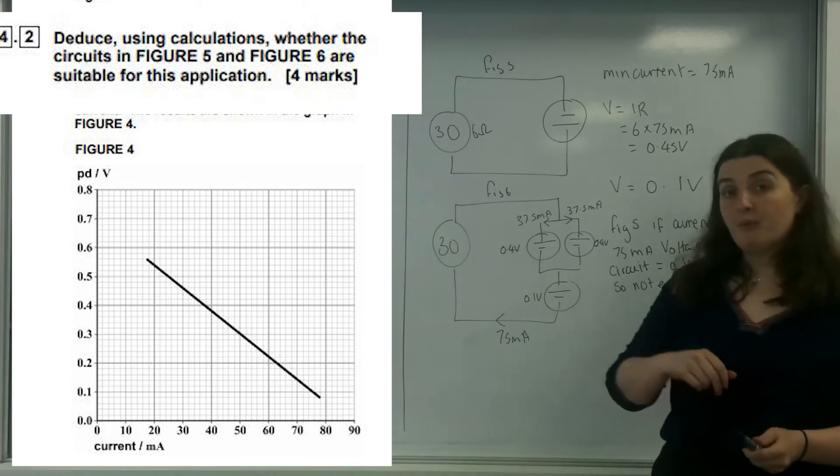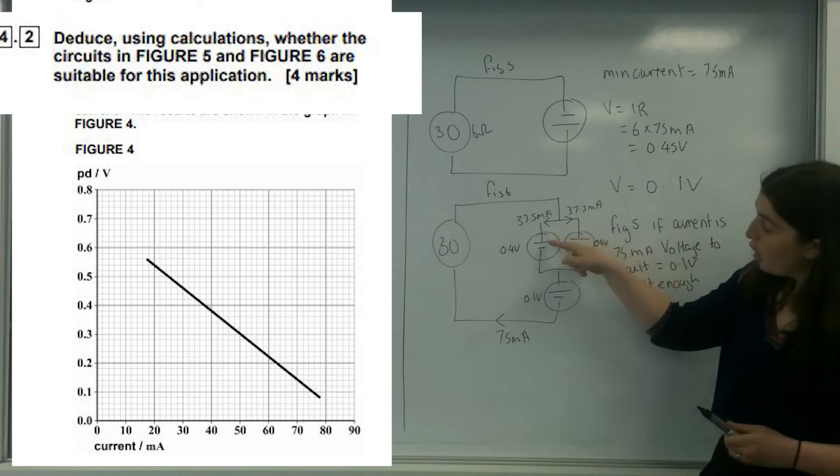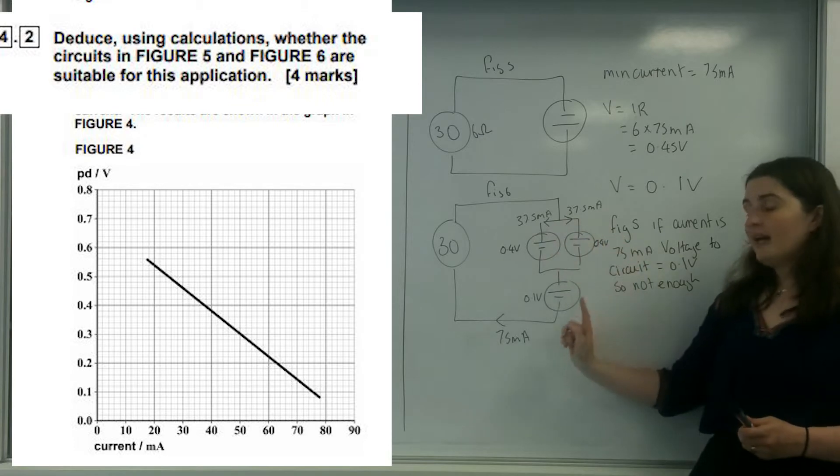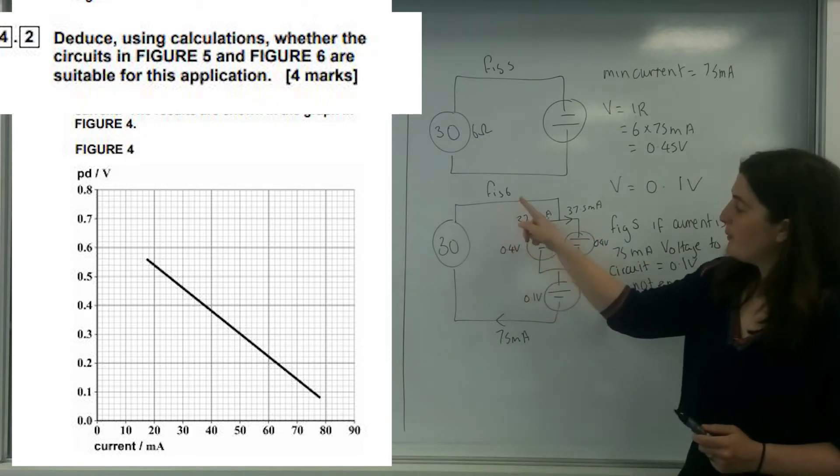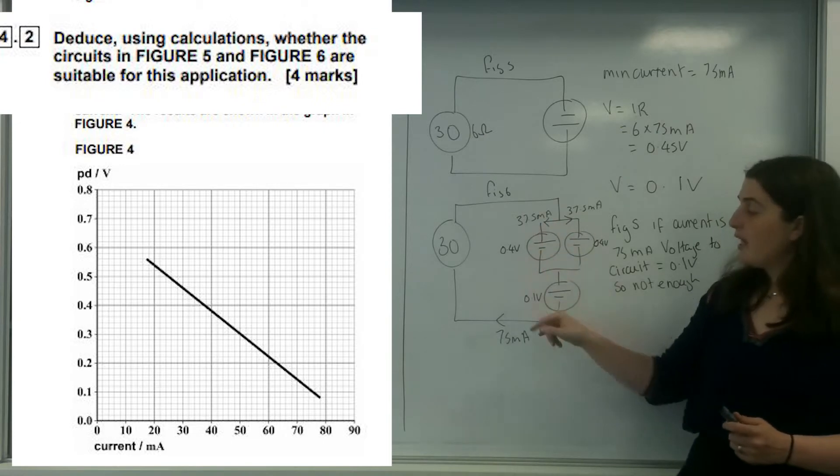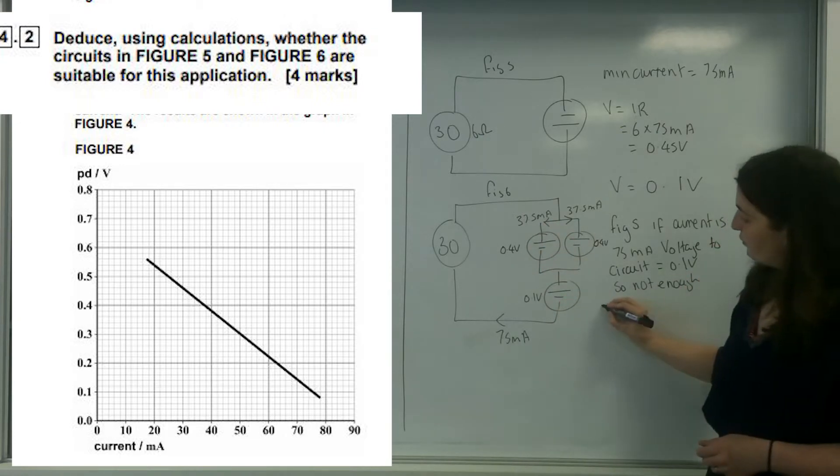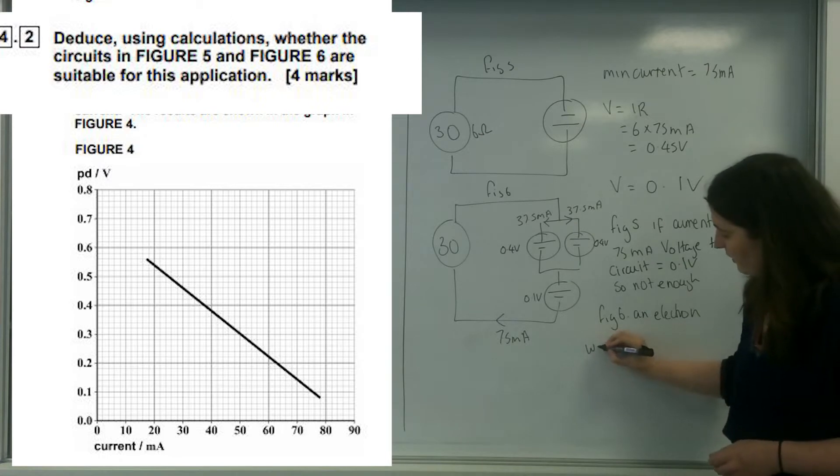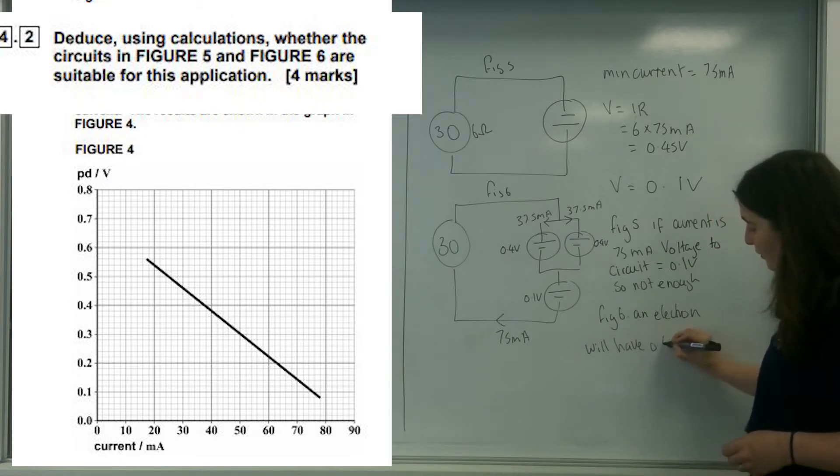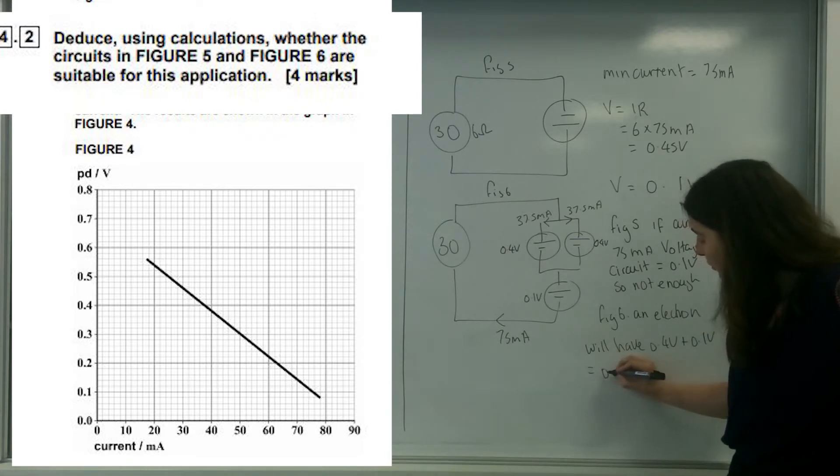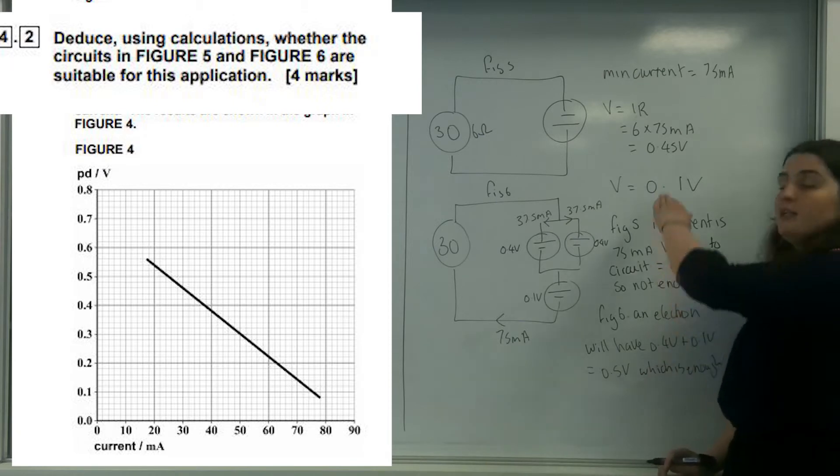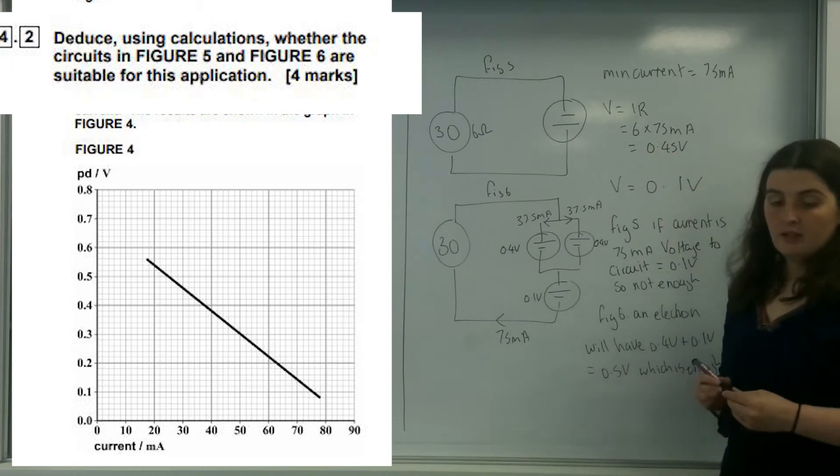But there is a trick that you've got to remember with Kirchhoff's law: the current will only flow through one of these paths. An electron will only go through one of these paths. An electron coming around would pick up 0.4 volts from here and 0.1 through here. So, in figure 6, an electron will have 0.4 volts plus 0.1 volts, which equals 0.5 volts, which is enough because all I needed was 0.45 volts.